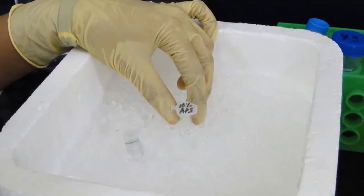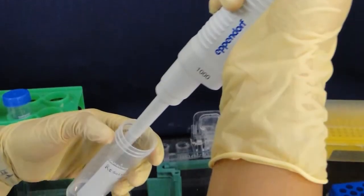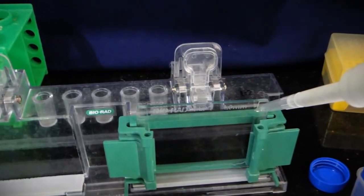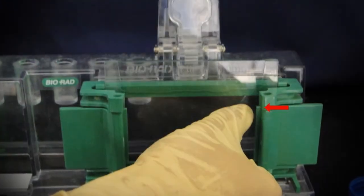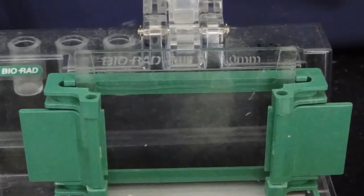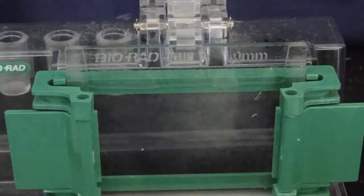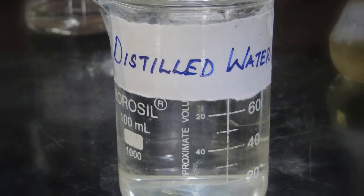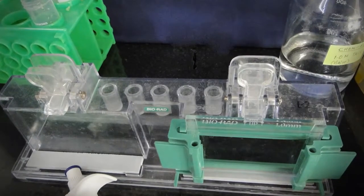Add APS and TEMED to the monomer solution just before pouring it in between the glass plates and mix well by swirling gently. Pour the solution until it reaches a mark on the glass plate. It is okay if you introduce air bubbles. Add a layer of isopropanol or distilled water on top of the gel to level the poured gel. Allow the gel to polymerize for 20-30 minutes.